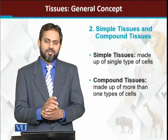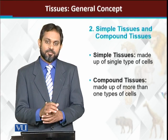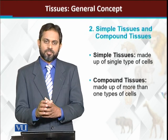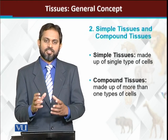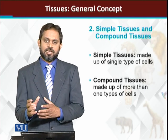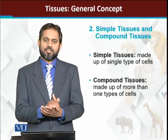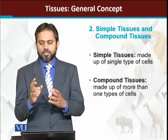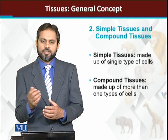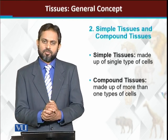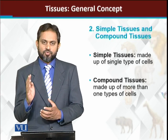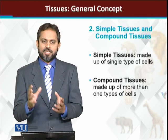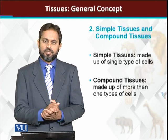If the cells making up a tissue are not the same — if their structure is different — then we won't call it simple. Different types of cells making up one tissue — that is called compound tissue. In compound tissues, all the cells perform the same function but are structurally different. So structurally different cells together form a compound tissue, and if similar cells form a tissue, that is a simple tissue.